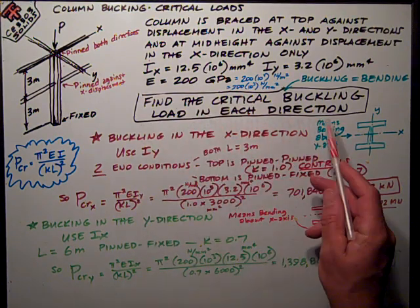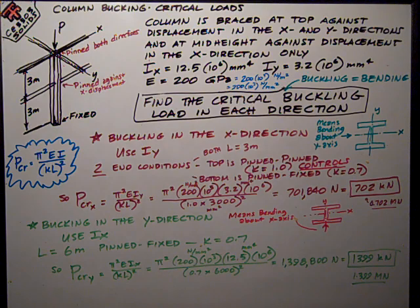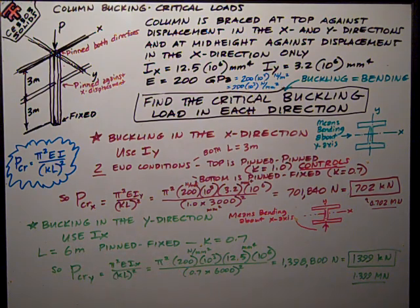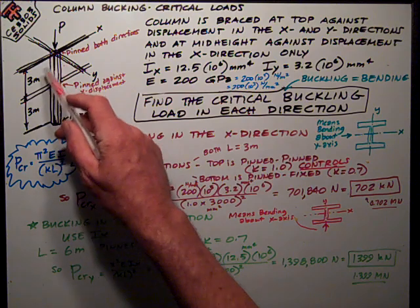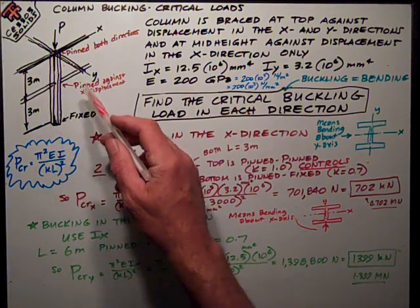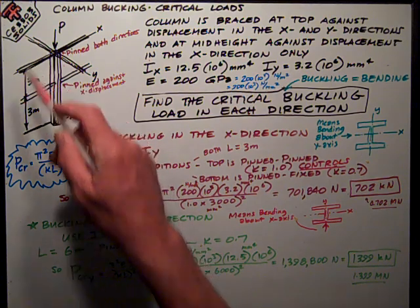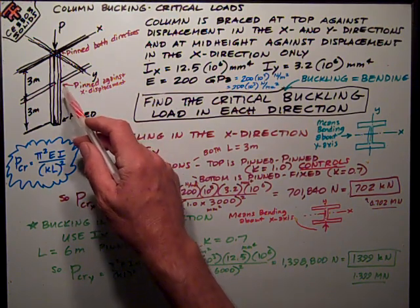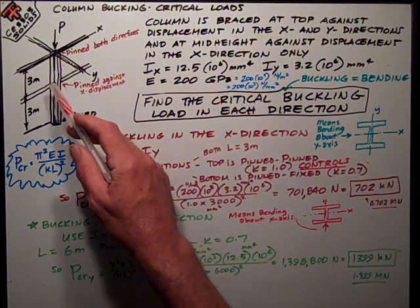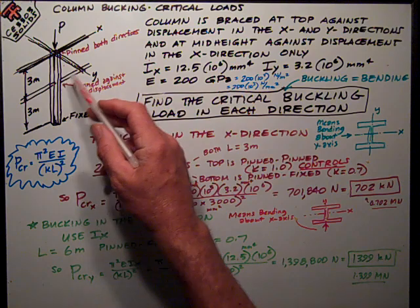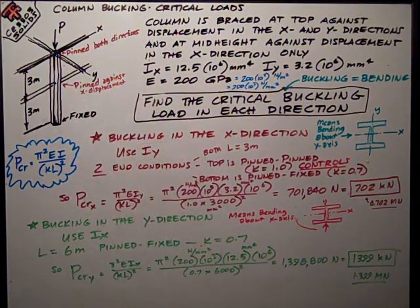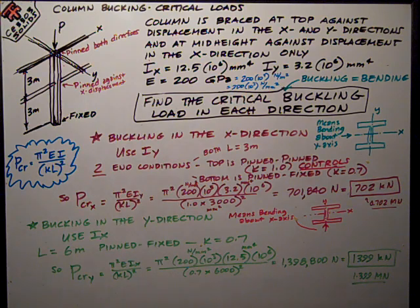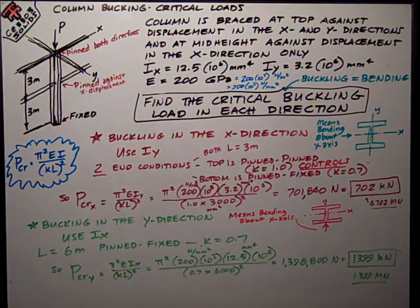The task was to find the critical buckling load in each direction. You've got to realize that for any shape, you have a moment of inertia about the X axis and the Y axis, and the length of the column in each direction. That's why you have bracing, to reduce the overall length of the column. This is a pretty typical case, because the Y axis is so much weaker, it tends to buckle about that Y axis. So, you brace against deflection in the X direction, which is helping the Y axis bending, and you can increase your allowable critical buckling load.